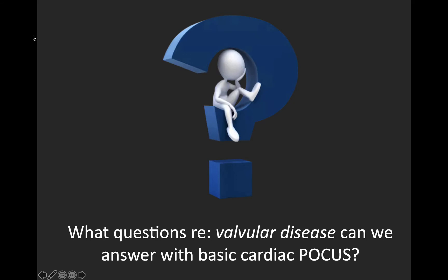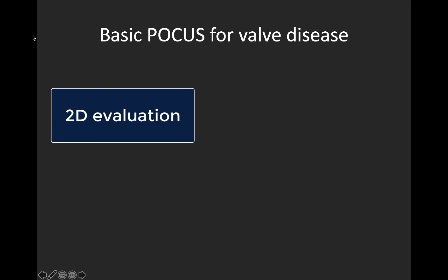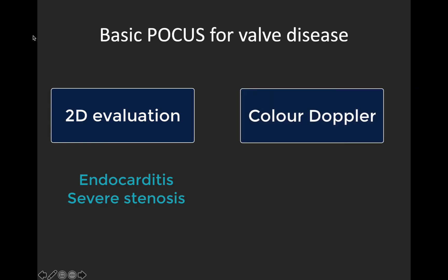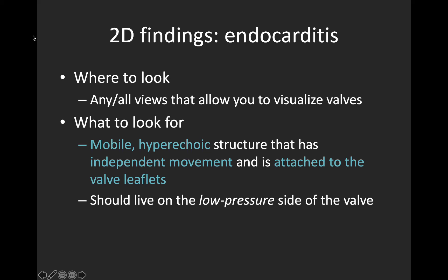So what does fall within the scope of basic valve evaluation in POCUS? There are two main domains. The first is two-dimensional evaluation to look for clues of severe valve disease — the two most common things being endocarditis, looking for vegetations, and morphologic clues to severe stenosis. Basic POCUS is not a definitive test for these conditions, but it can help adjust our pretest probability at the bedside. The second is the use of color Doppler to identify severe regurgitation, specifically aortic, mitral, and tricuspid regurgitation.